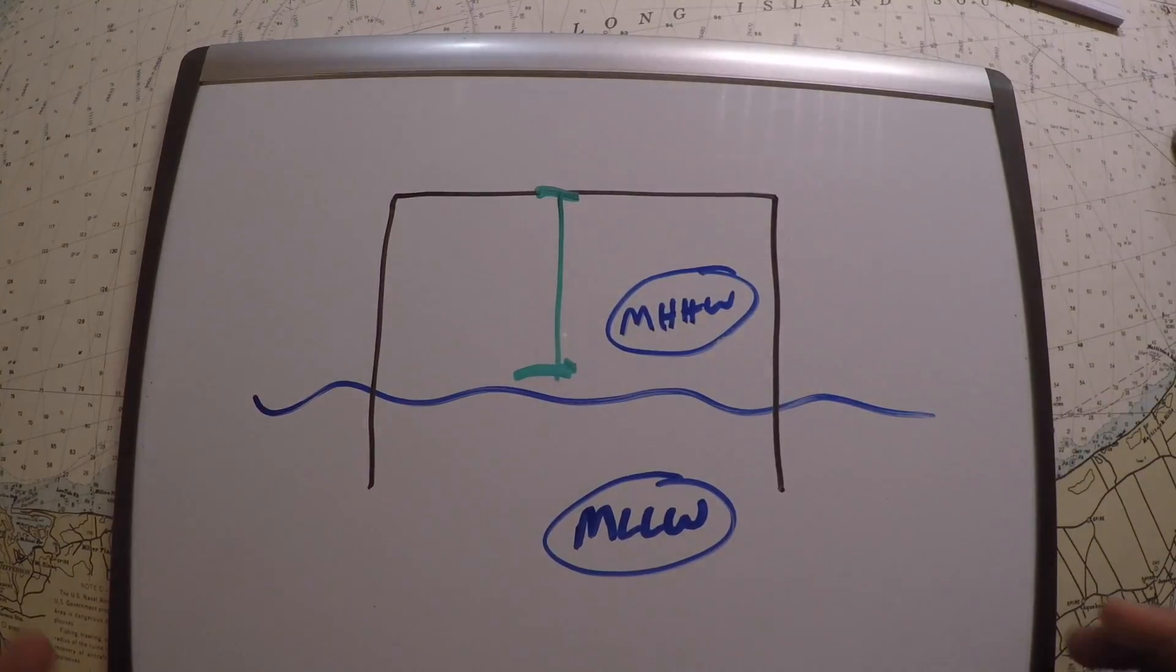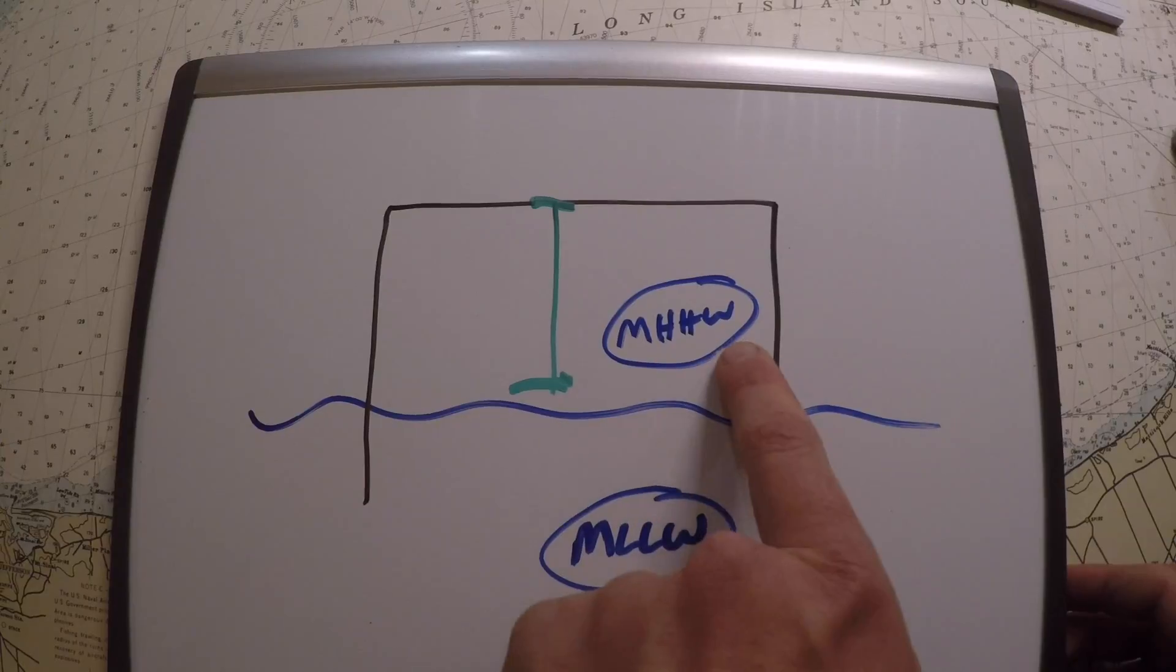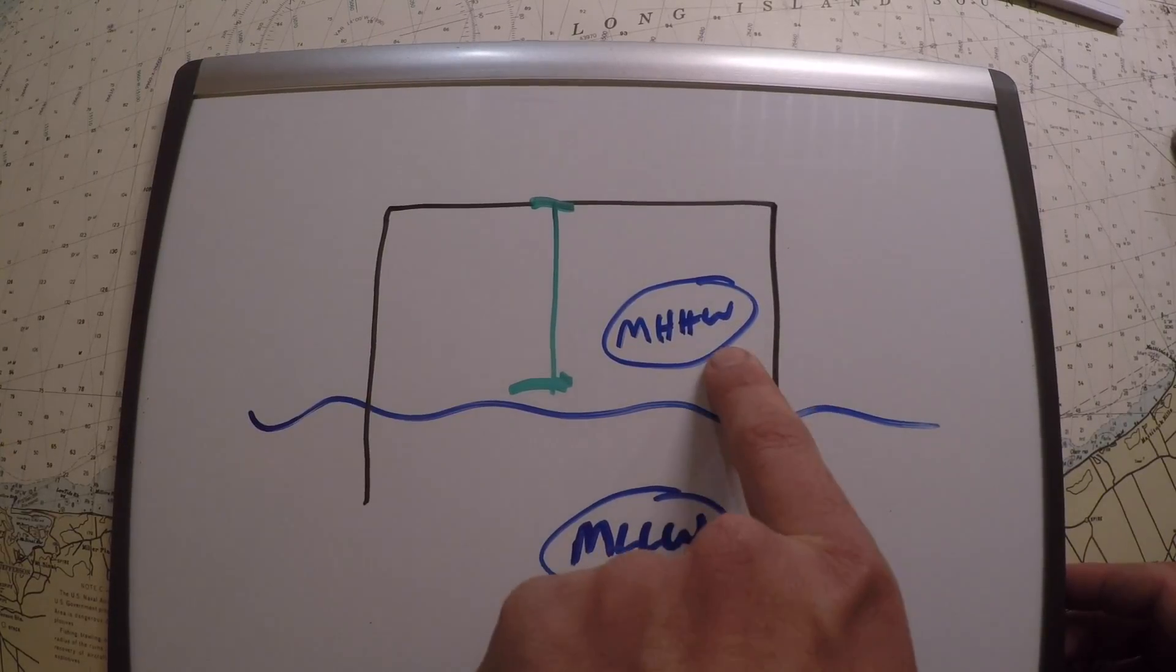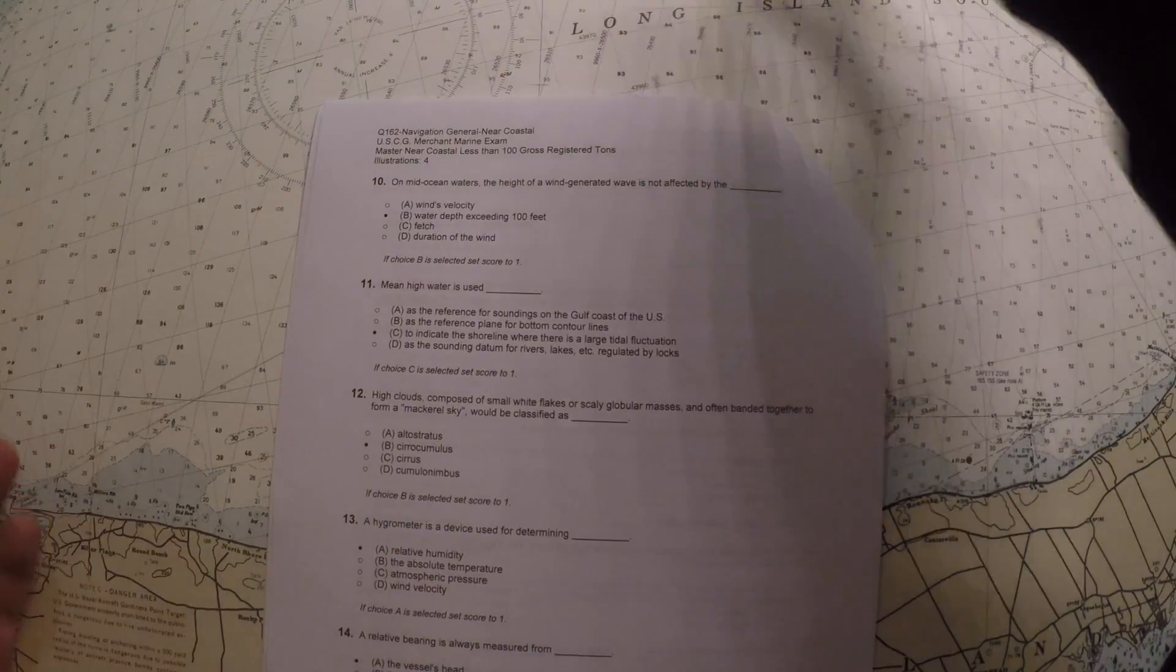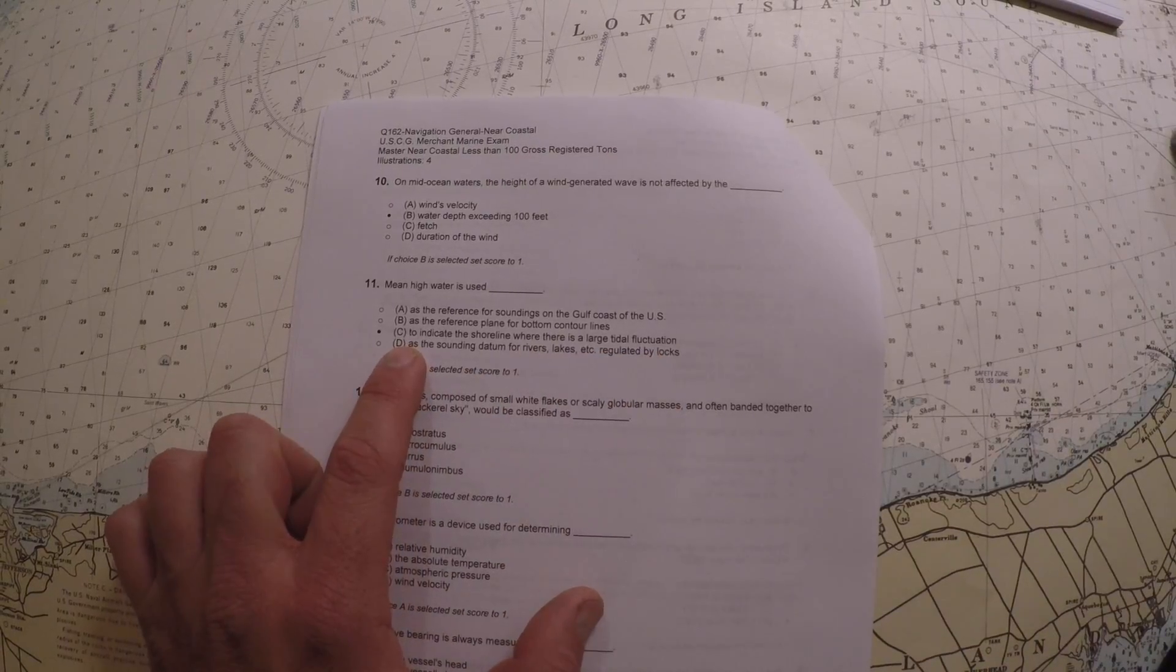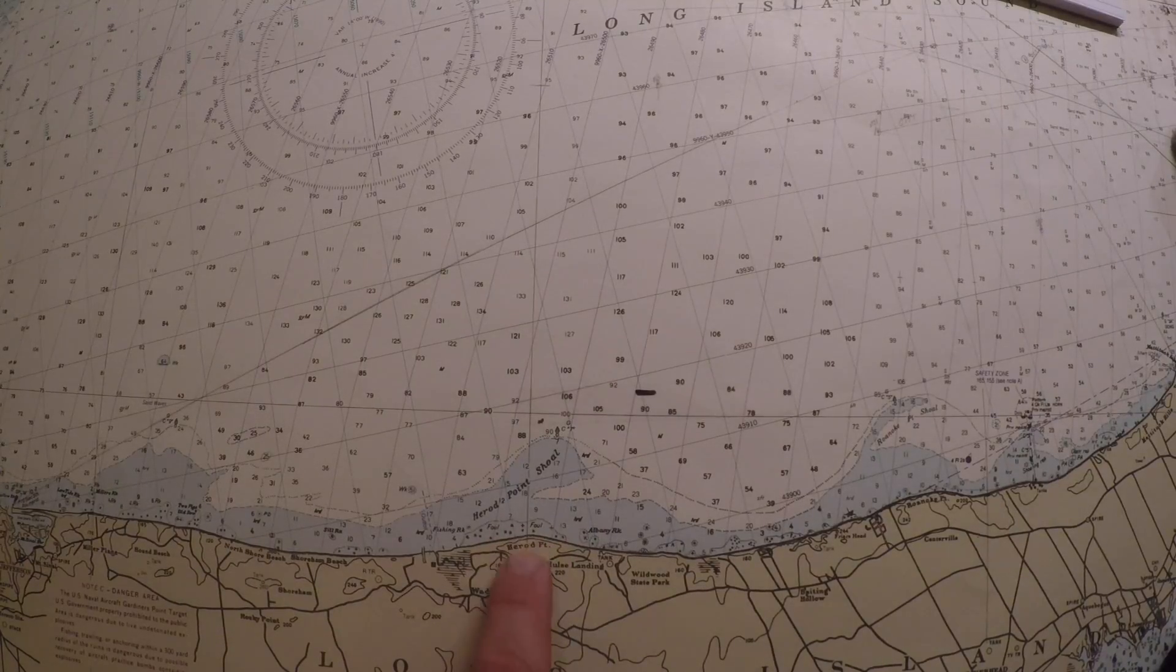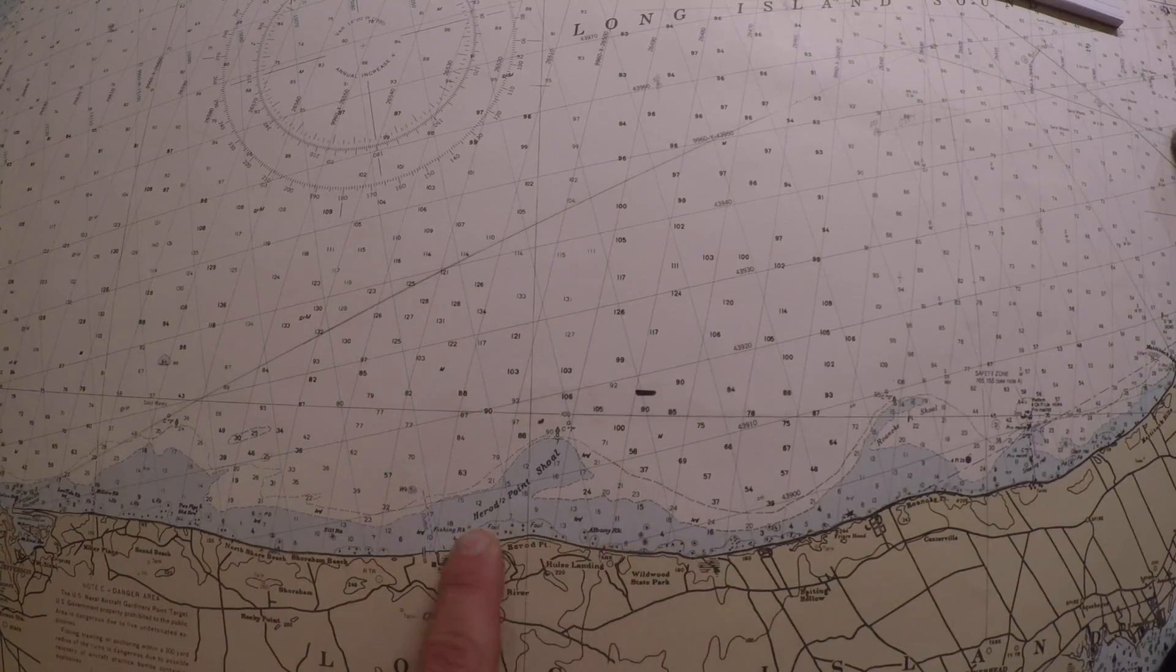This is kind of a long story to answer this question, I just wanted to explain the difference. Most people don't see mean higher high water, they see this on charts. This is sometimes used for instance going under bridges. The answer to this question is to indicate the shoreline where there's a large tidal fluctuation. Going back to that theme of being cautious, if you've got a shoreline with a large tidal fluctuation, it's probably safer to show where the shoreline is at higher high water so that you've got some margin for error in there.